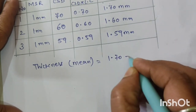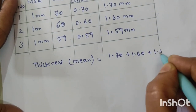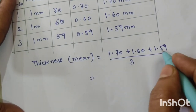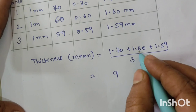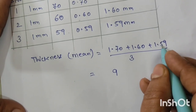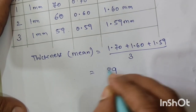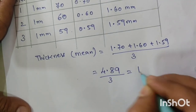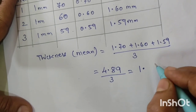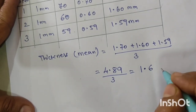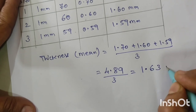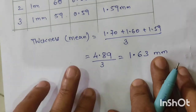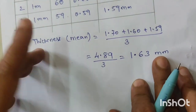We find the mean thickness: (1.70 + 1.60 + 1.59) / 3 = 4.89 / 3 = 1.63 mm. So 1.63 mm is the thickness of the thin paper.